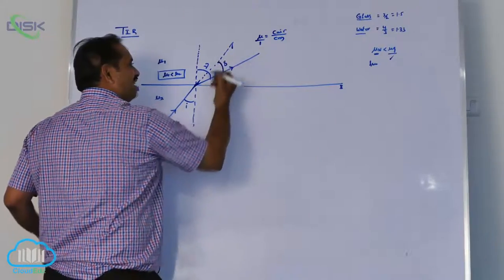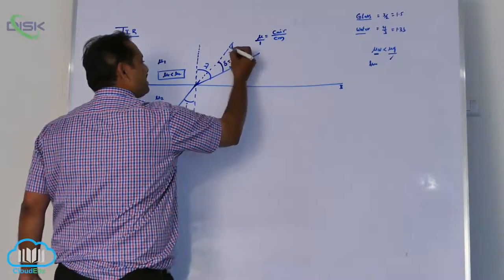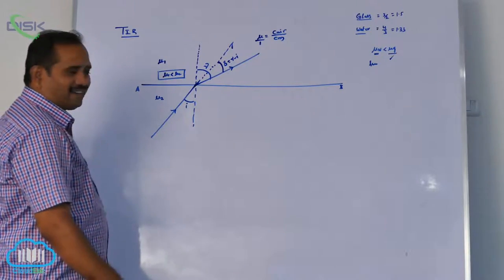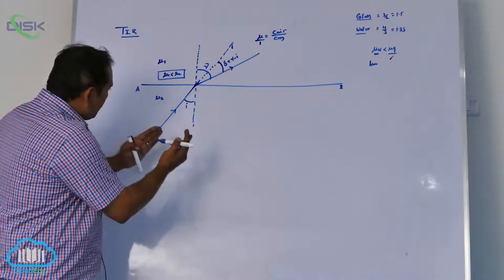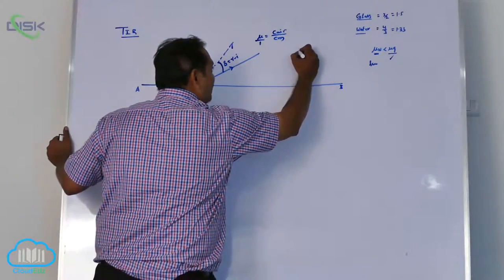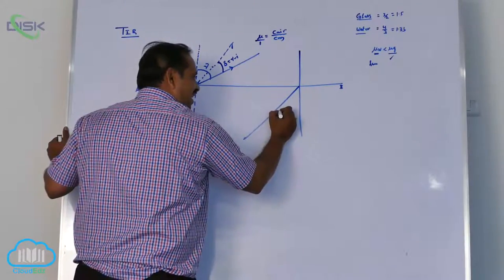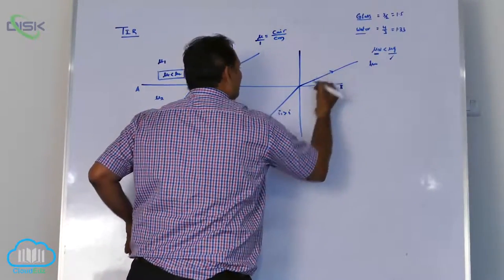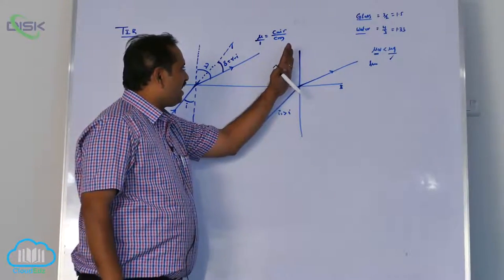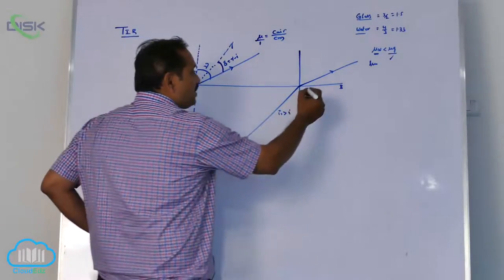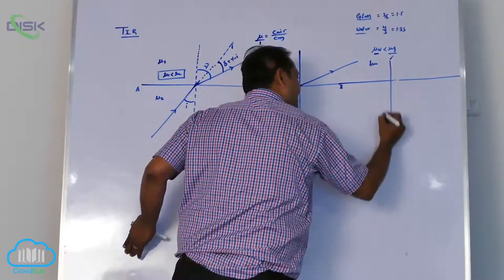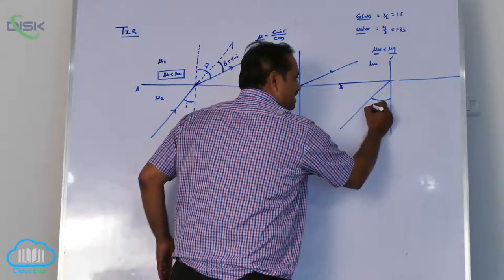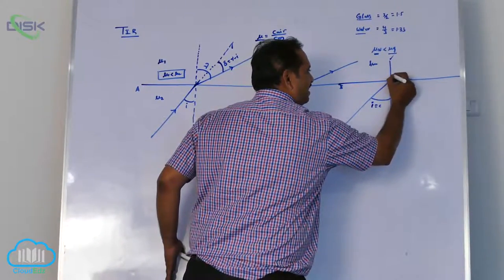The angle of deviation is R minus I — the angle between the incident light and the emergent light is called the angle of deviation. If I increase the angle of incidence further, say I1 greater than I, then the refracted light bends even more away from the normal. At a particular angle of incidence, the refracting angle becomes 90 degrees.